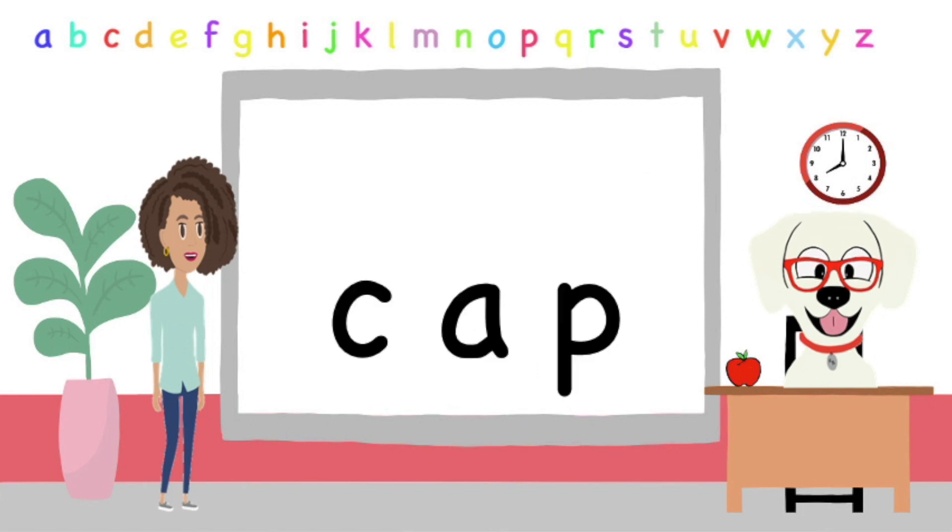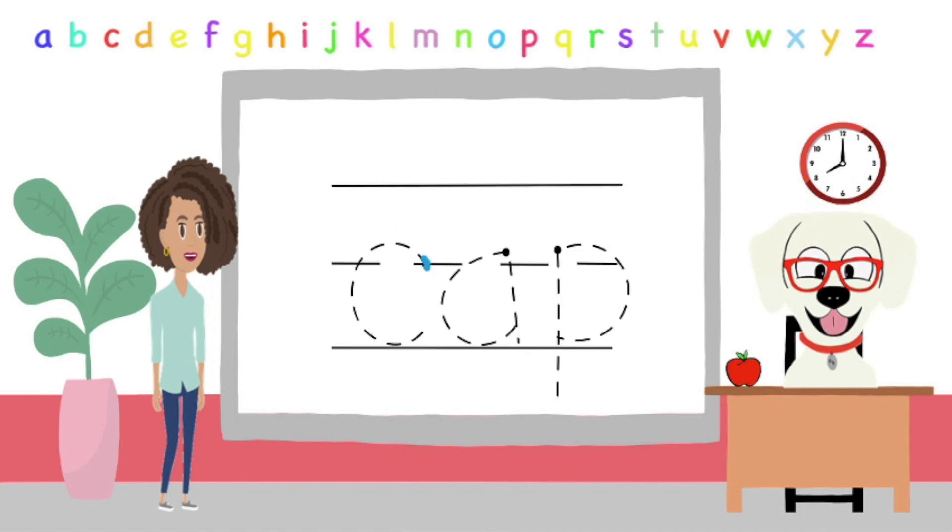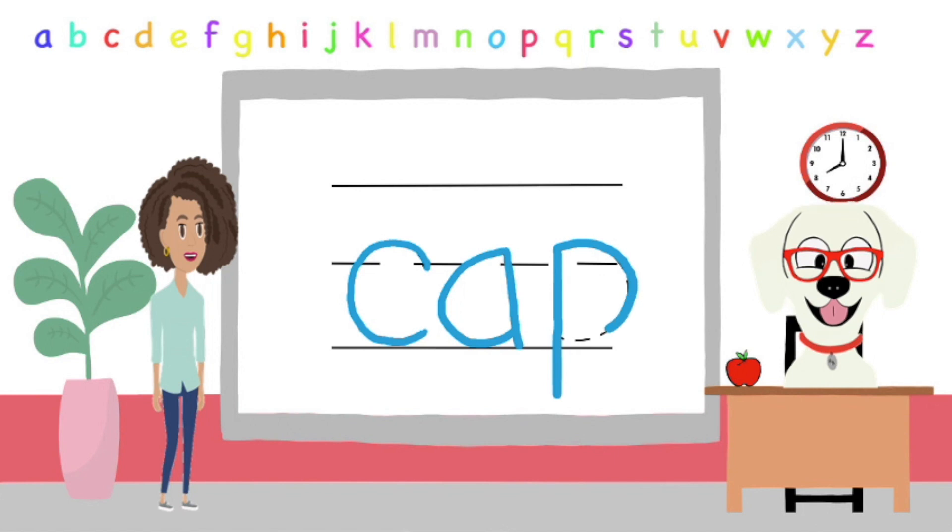Good job! Next is K, A, P. K, A, P. K, A, P. What word is K, A, P? Correct! It's CAP. K, A, P. CAP. Now, let's write the word cap. K, A, P, K, A, P, cap.